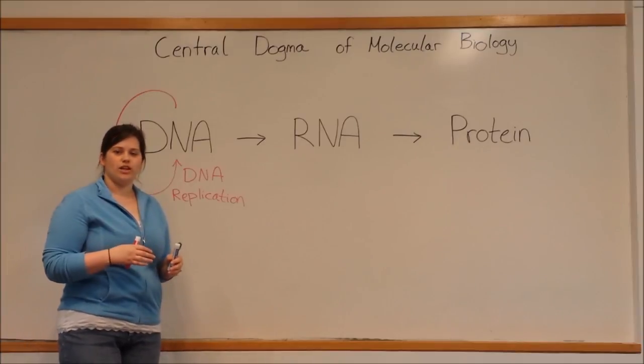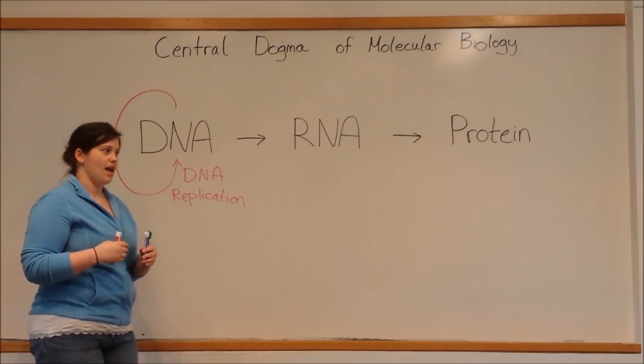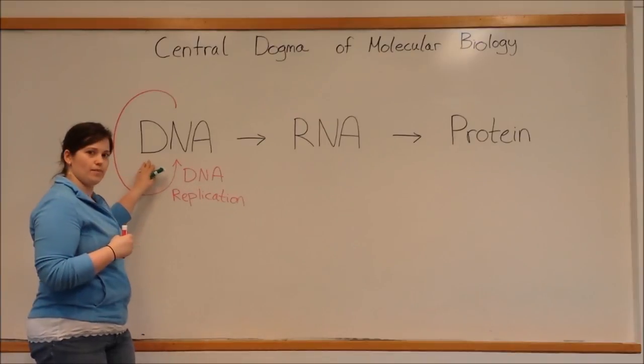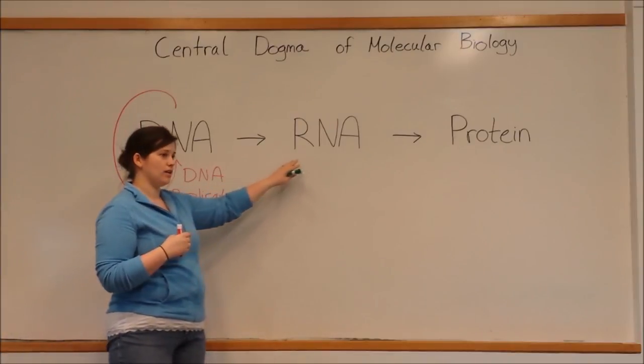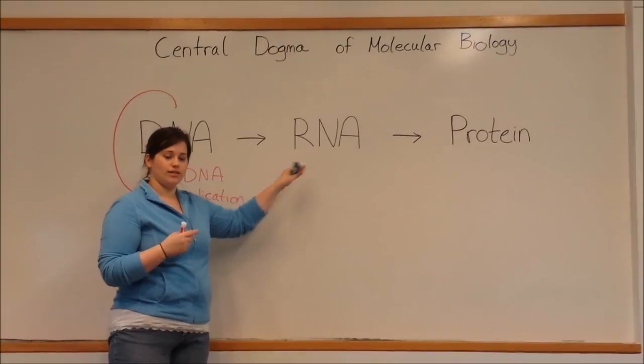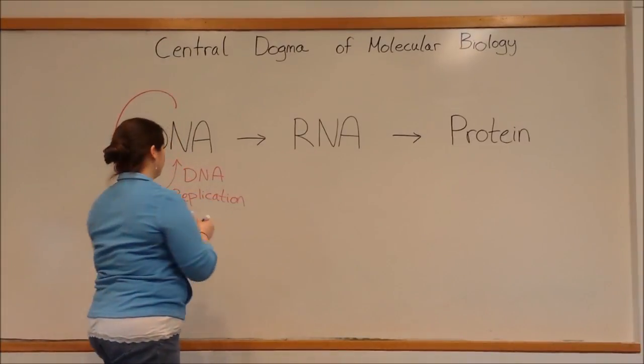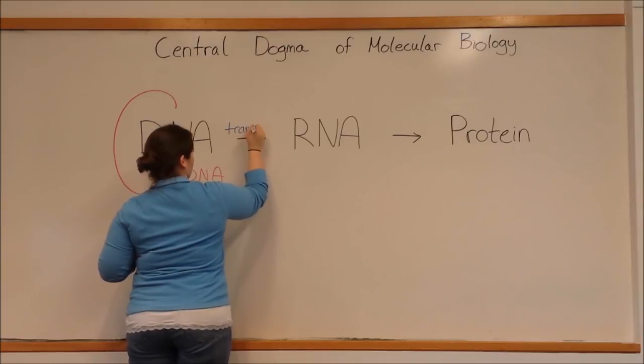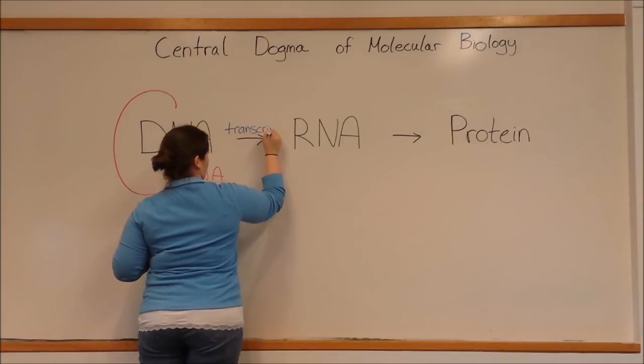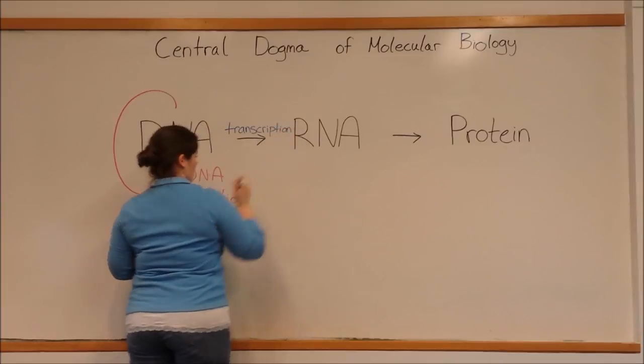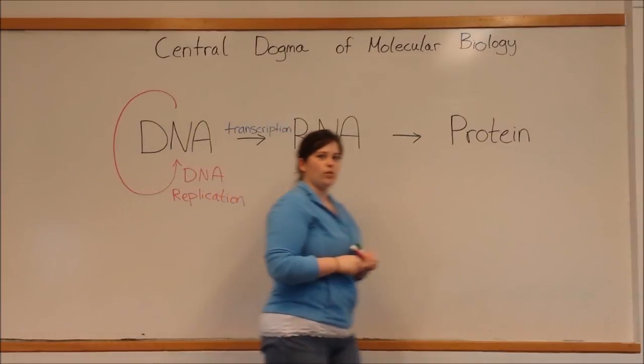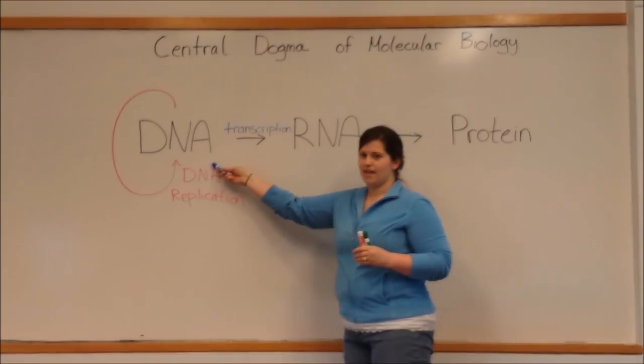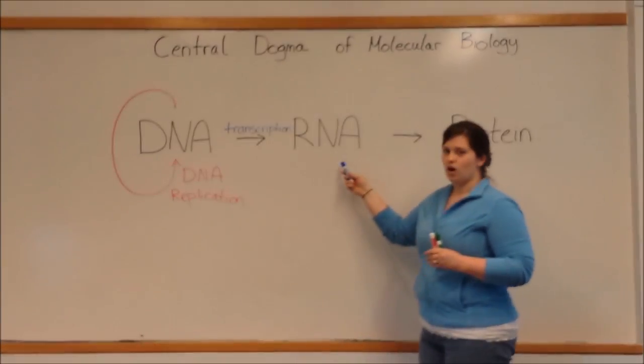Now, the genetic information that is contained in DNA, in order to make proteins eventually, first has to be transferred into RNA through a process called transcription. Transcription is when RNA polymerases use the DNA as a template to make RNA.